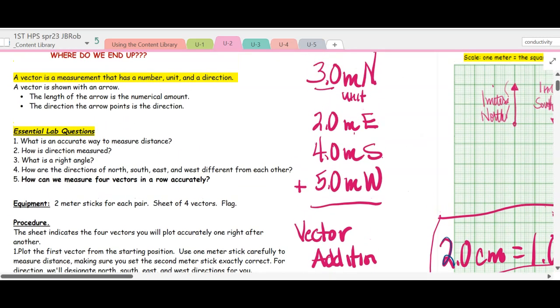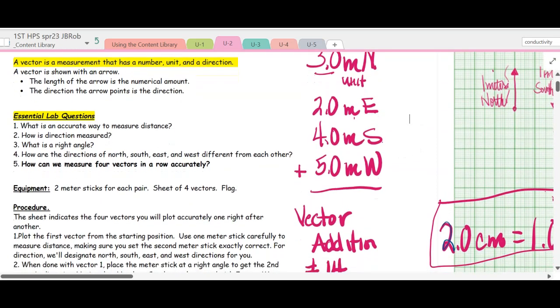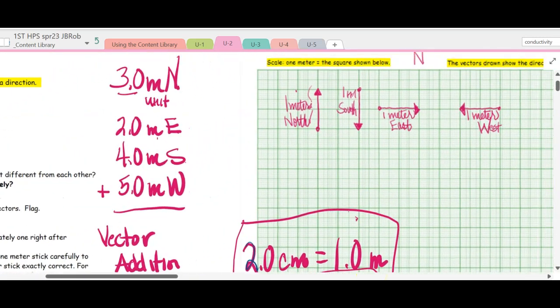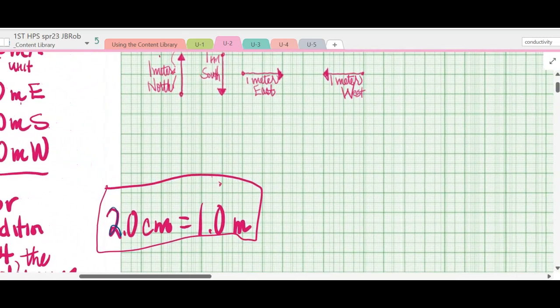So the vector addition is not going to be 14. So 3 plus 2 is 5, 9, 14. But because they're going different directions, the vector sum is not going to be 14, which is the scalar sum. The scalar sum, it's not going to be that. So let's go over here and look at it when we plot it.